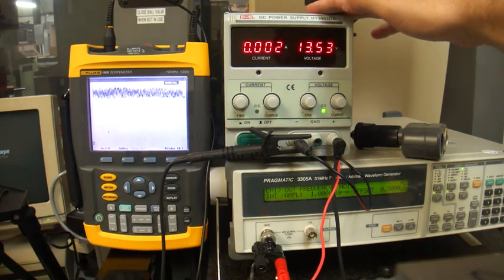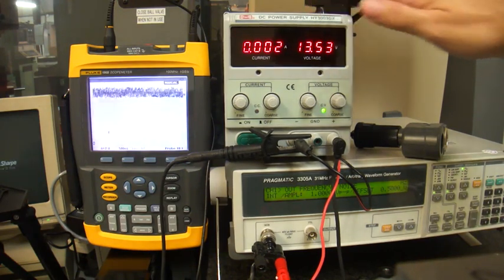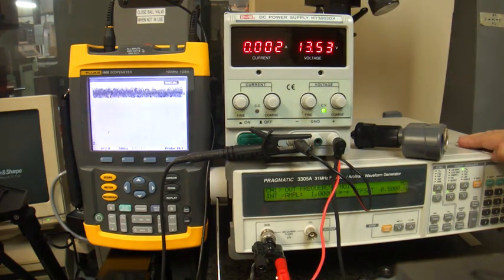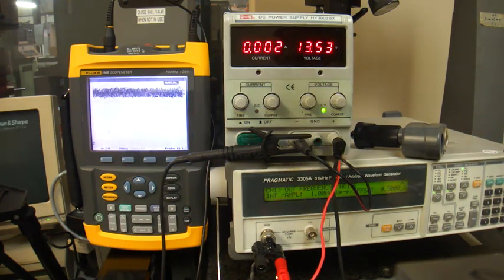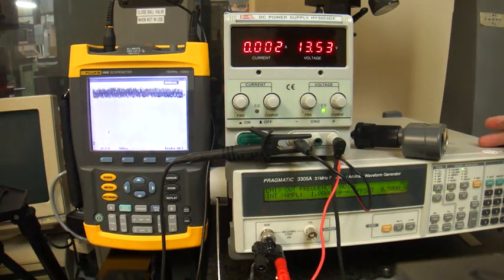What we've set up here is a power supply to simulate a car battery and a function generator putting out one volt peak-to-peak noise that we're injecting into that voltage and it's showing up on the left-hand side on the oscilloscope.